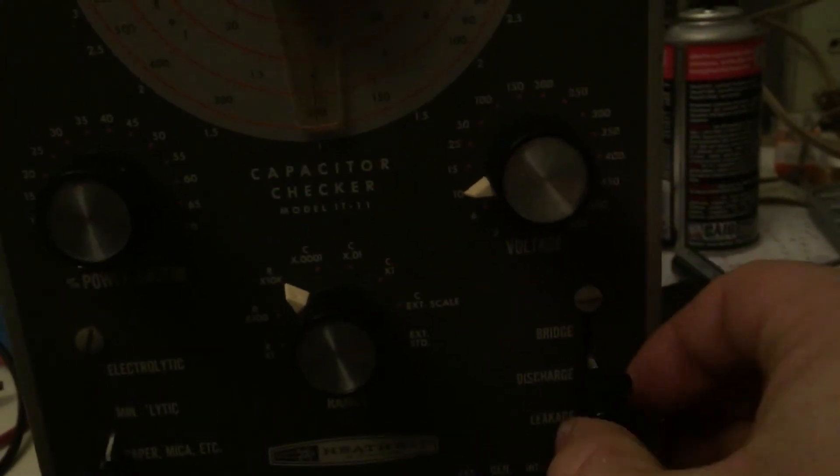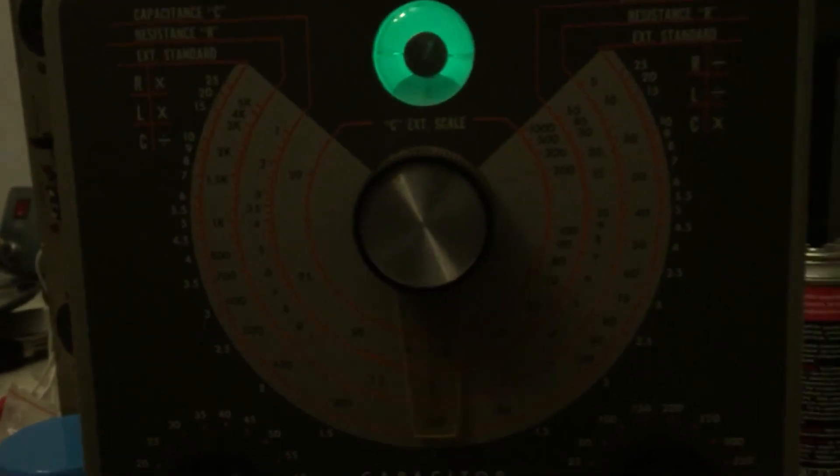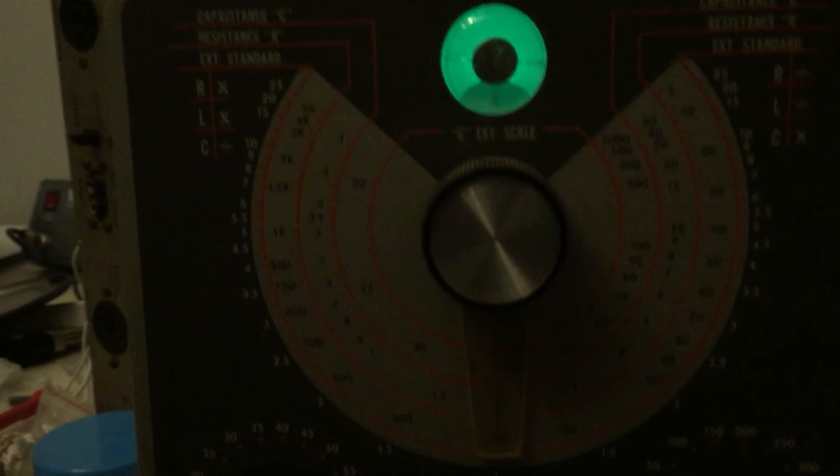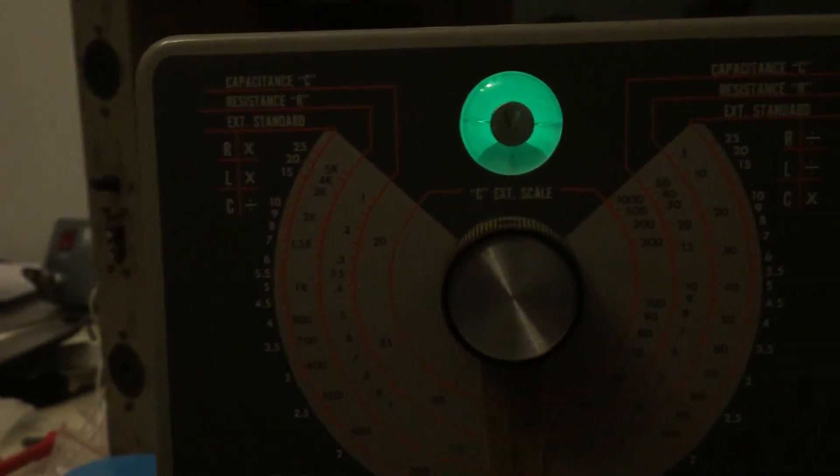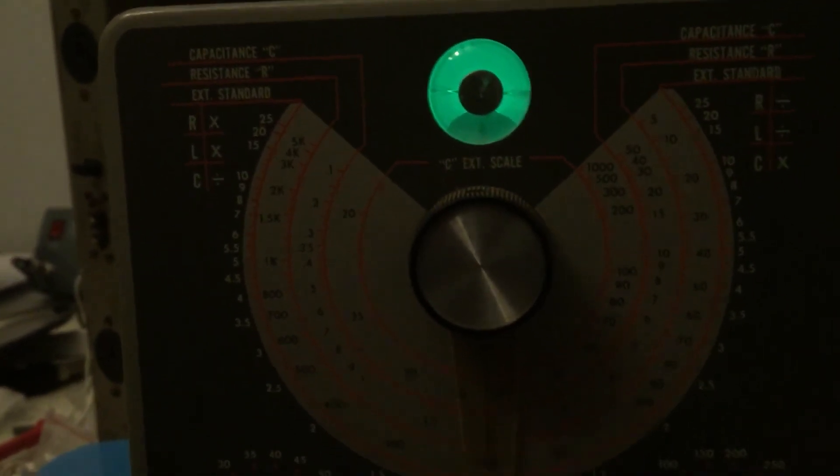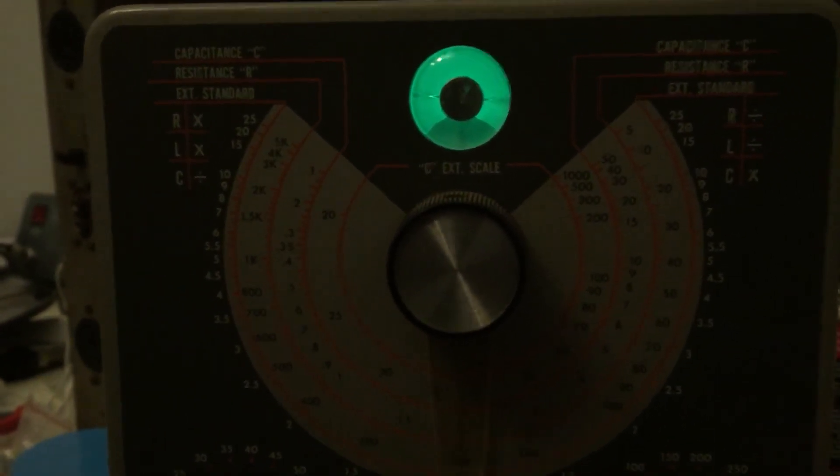So afterwards I just hit the discharge button and now the capacitor is safe. Not that it was really dangerous at 6 volts, but if you're running up 600 volts you definitely want to discharge the capacitor before you touch it. That's kind of how it works, so thanks for watching.